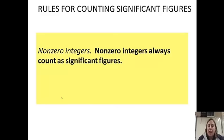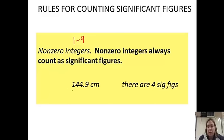We're going to talk about non-zero integers. So, this is any number between one and nine. Numbers between one and nine always count as significant figures. So, here's an example of a measurement in centimeters. It has four digits that are recorded and no zeros. So, there are four significant figures, or you could also call them significant digits. I usually like to use the term sig figs. It's convenient and quick.